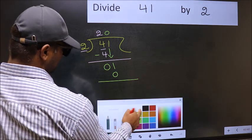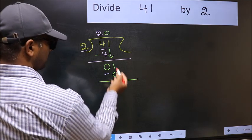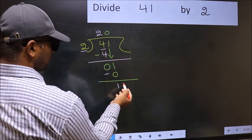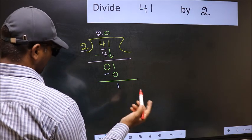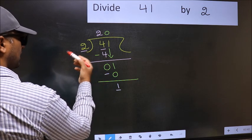Now you subtract. 1 minus 0, 1. Over here, we don't have any numbers to bring it down. And here we have 1, here 2. 1 is smaller than 2.